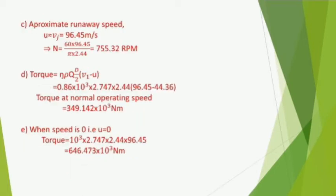For approximate runway speed: the runway speed is the maximum surface speed of the Pelton turbine, where u = v2 = 96.45 m/s. Therefore n = 60 × 96.45 / (π × 2.44) = 755.32 rpm.